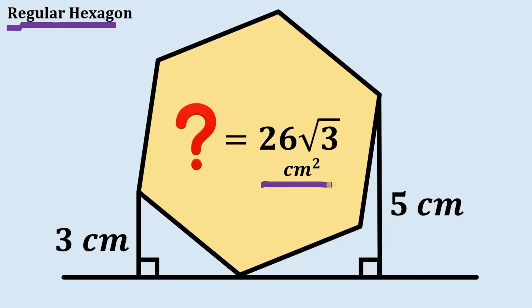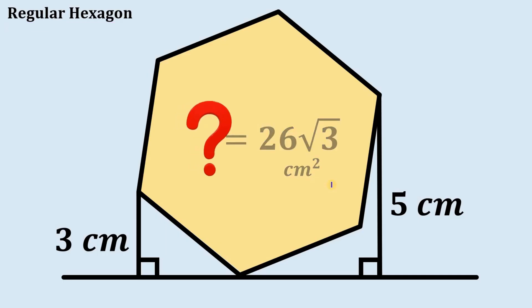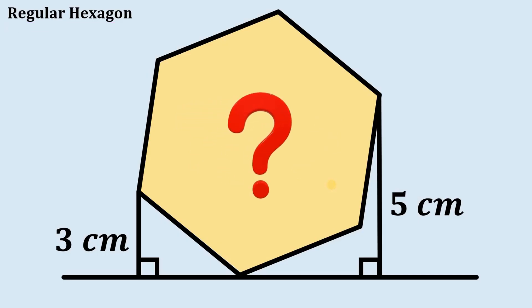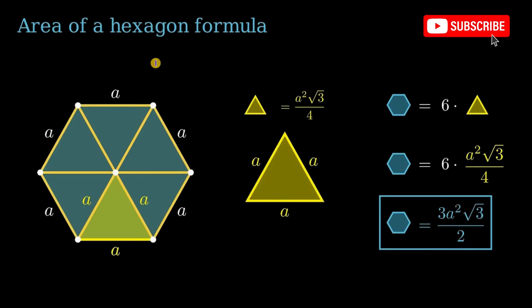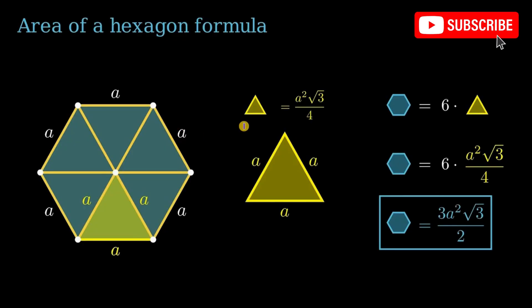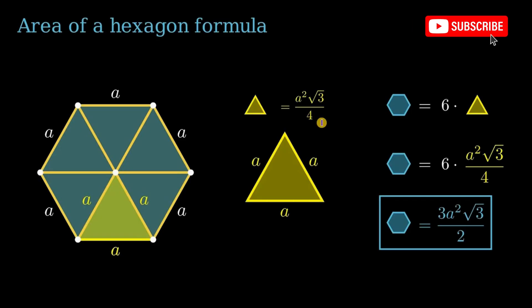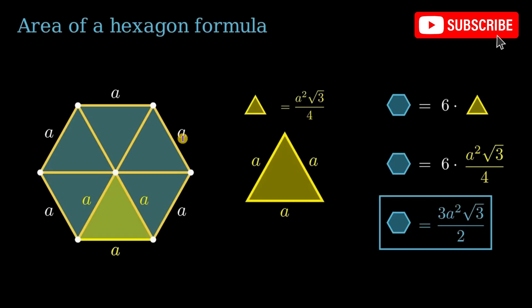Now the question is how do we get this result? To answer this kind of question, we're going to consider the area of a regular hexagon given one of its sides. If we have a regular hexagon, we can split it into six equilateral triangles. The area of an equilateral triangle can be written as a² times square root of 3 over 4, where a is the length of its side.